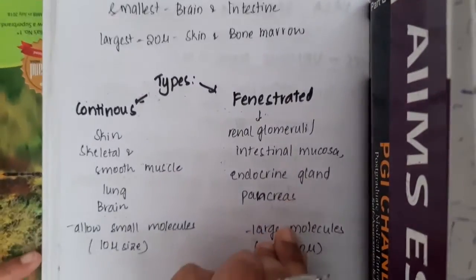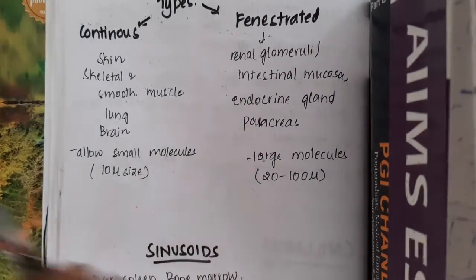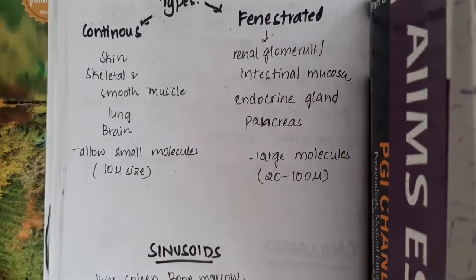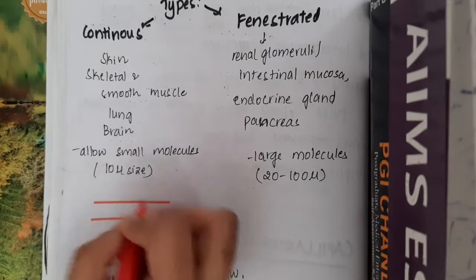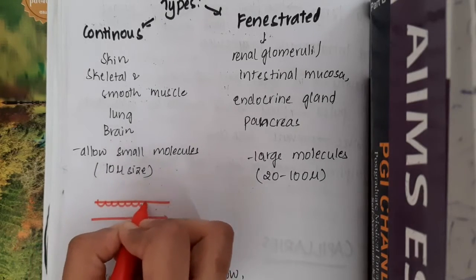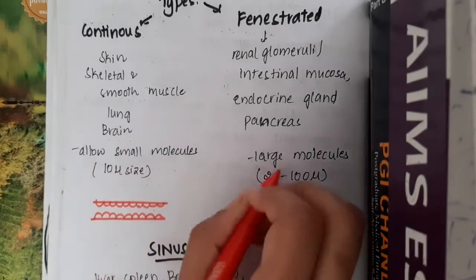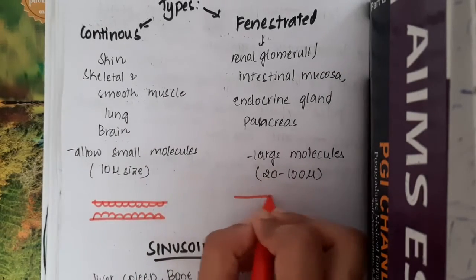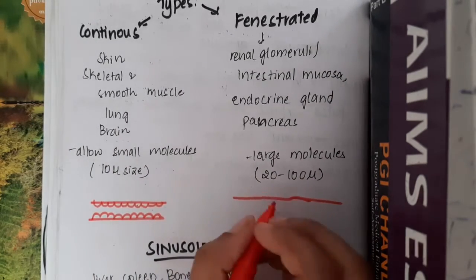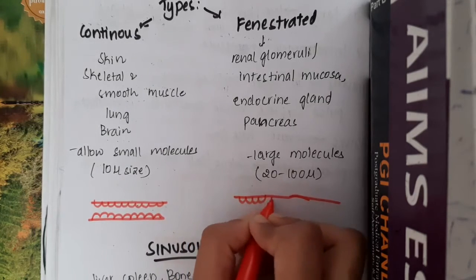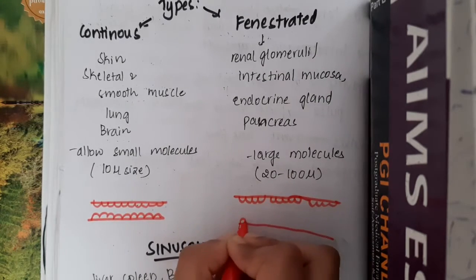The types of capillaries are: in continuous capillaries, there is continuous endothelium present. In fenestrated capillaries, there are some holes or spaces in the capillaries.